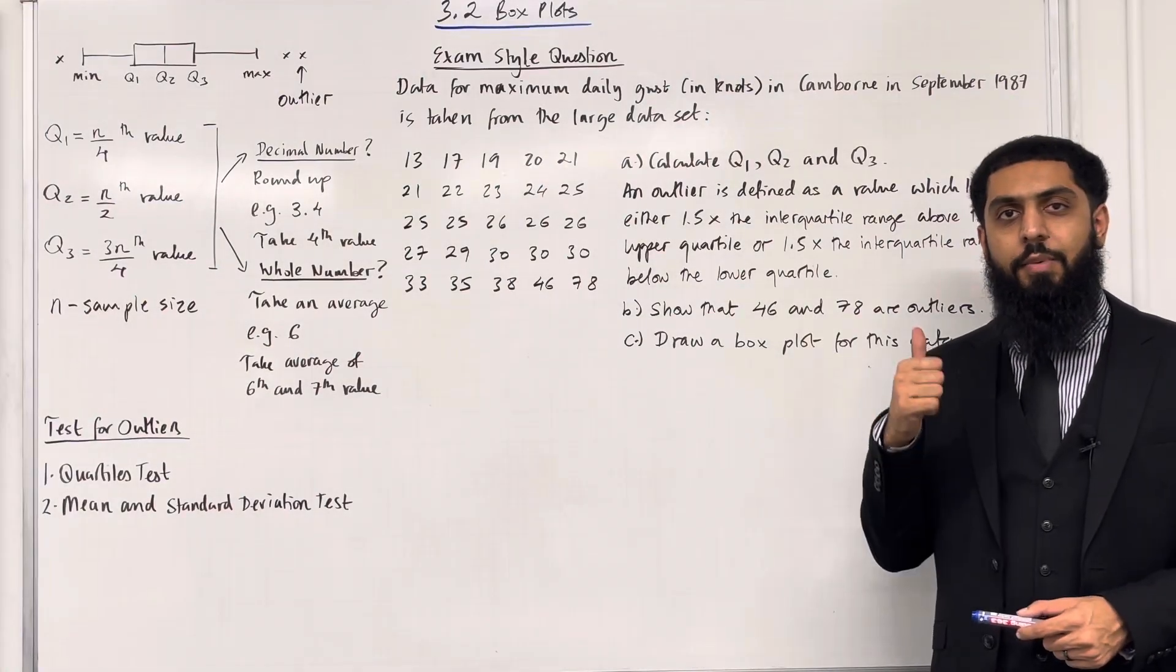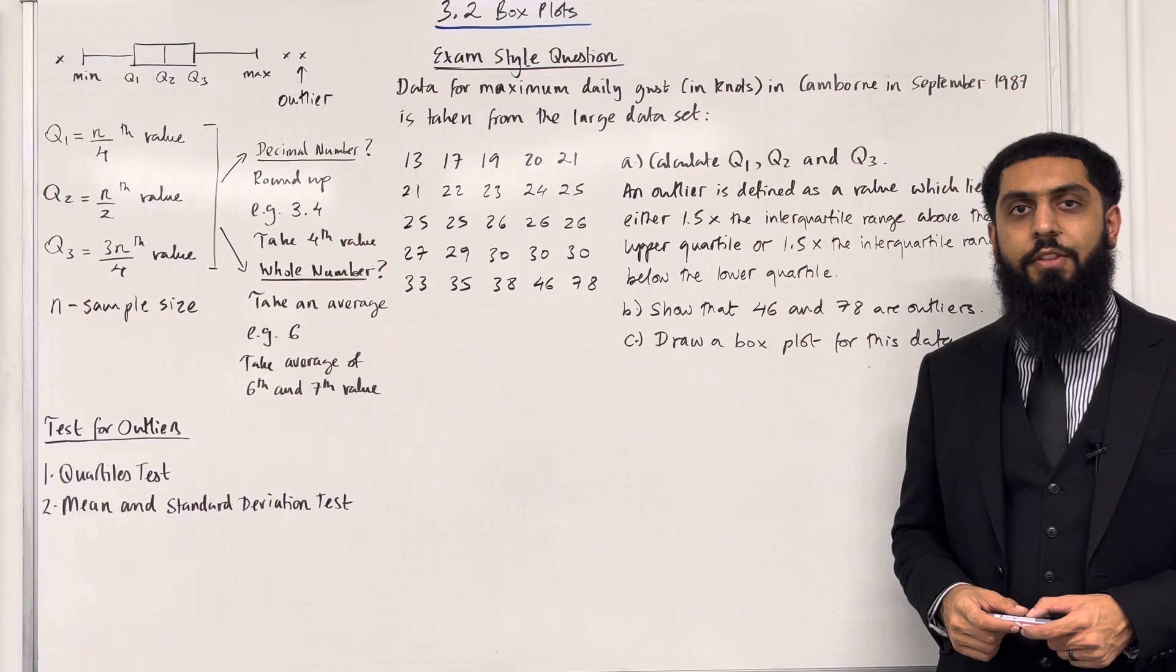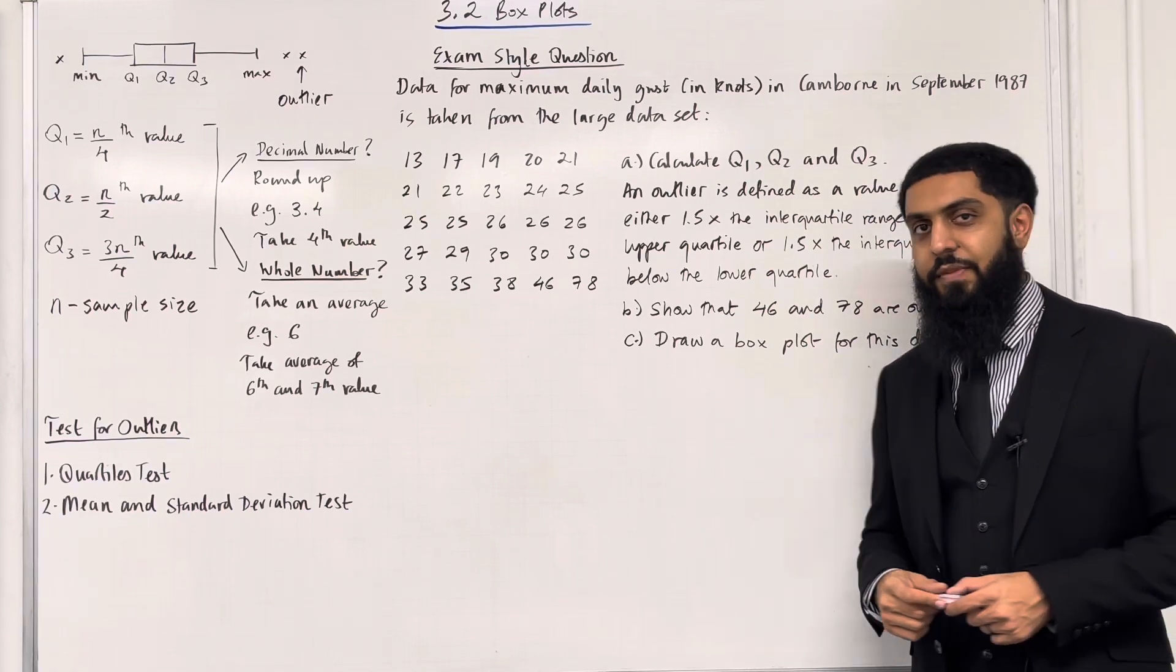Welcome back. In this video, I'll be looking at 3.2 box plots. 3.2 represents Chapter 3, Section 2 of the Pearson A-Level Mathematics Pure 1 textbook.